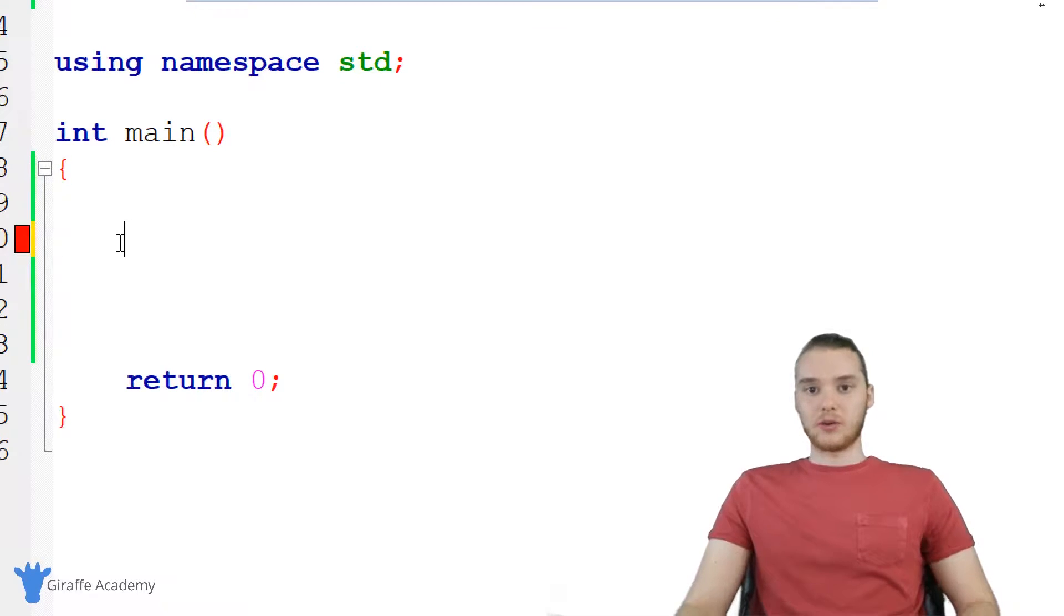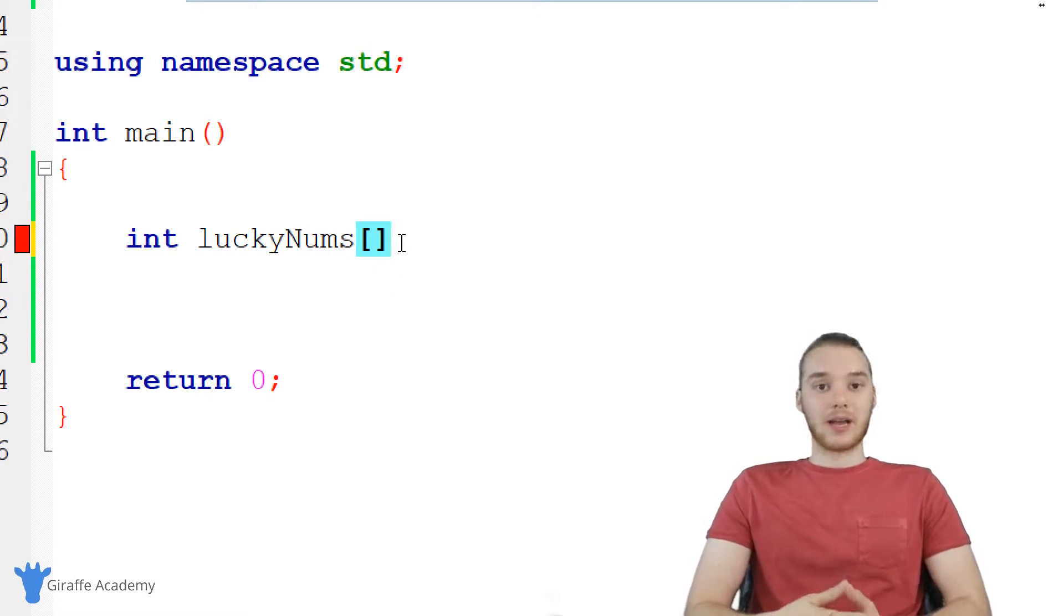You create an array a lot like you create a normal variable. So the first thing we have to do is tell C++ what type of data we want to store inside of the array. So I'm just going to make an array of integers, so I can just say int. And again, just like a variable, we're going to give this a name. So I could say like lucky numbers. Now here's where this gets different from a variable. When we're creating an array, we always want to put an open and close square bracket after the name. So after lucky nums, we're going to put this open and close square bracket. And that basically tells C++, okay, they want to create an array. So they want to be able to store multiple pieces of information inside of this container.